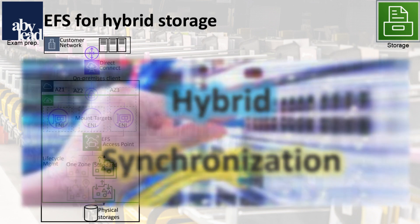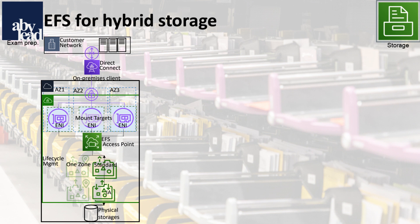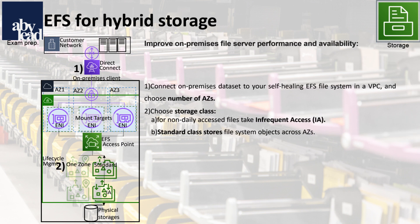You can improve availability with automated cloud backups, or improve your on-premises performance with bursting to the cloud. As an example, you connect your on-premises file system through Direct Connect with access to EFS in three AZs.